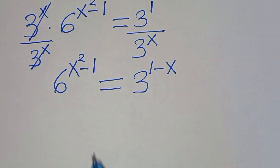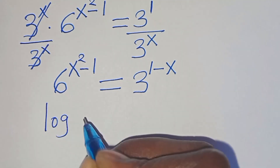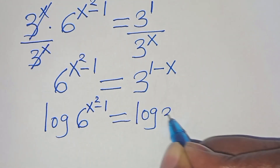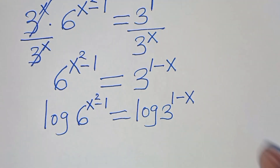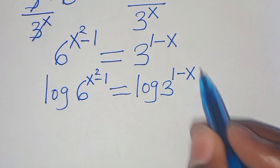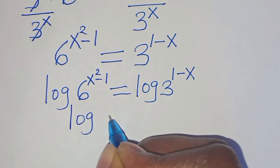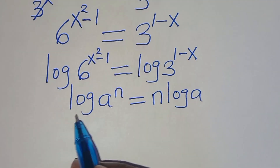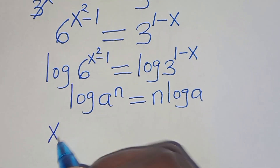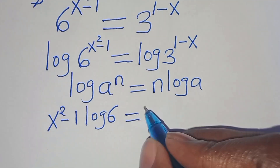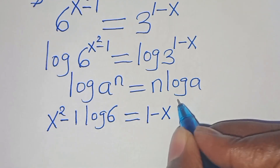The next step is to solve for x. We introduce logarithm on both sides, so that we have log 6 to the power of x squared minus 1 equal to log 3 to the power of 1 minus x. Now log 6 to the power of x squared minus 1 and log 3 to the power of 1 minus x are in the form of log a to the power of n, which can be expressed as n log a.